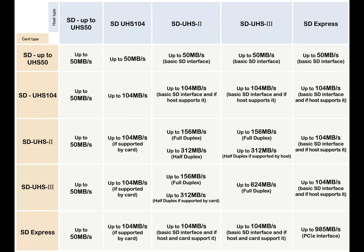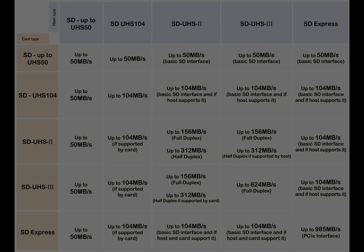This next diagram shows the actual bus speed — the throughput written in and out of the device and the actual speed it's obtaining. The last diagram shows all the different types: SD, UHS, UHS-2, UHS-3, and SD Express, showing their throughput and memory speeds.